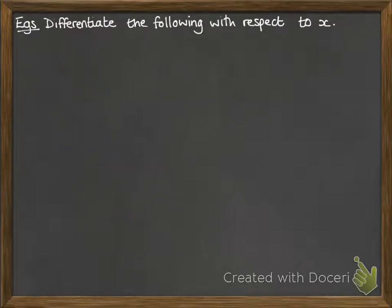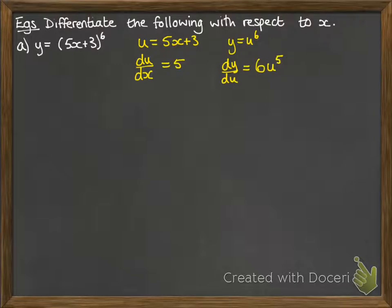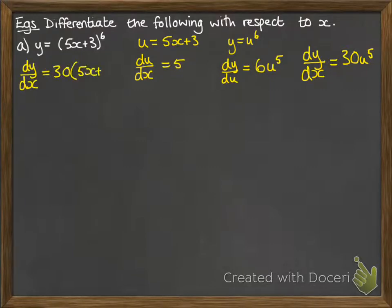If we want to differentiate the following with respect to x, we're going to do lots of chain rule practice now. So here's our first one. We're going to let u be the bit inside the bracket. y will then be equal to u to the power of 6. Differentiate each one, then put them together — dy by dx will be those two things multiplied together. Then we need to replace the u with what we know it's equal to, which is 5x plus 3. We don't want any u's left in our answer. So our final answer is 30 times (5x plus 3) to the power of 6.